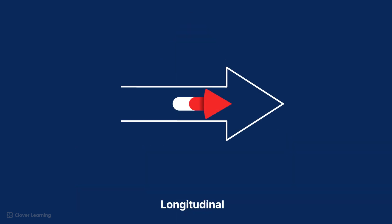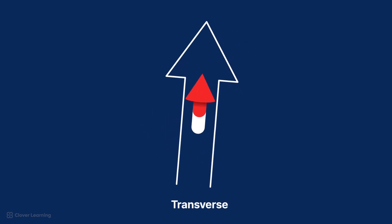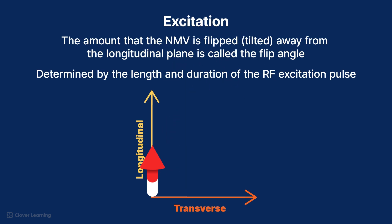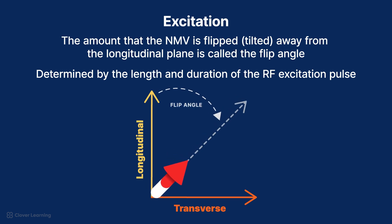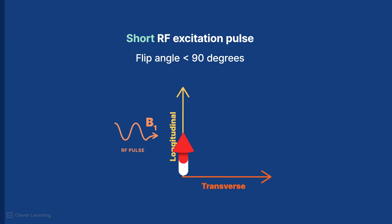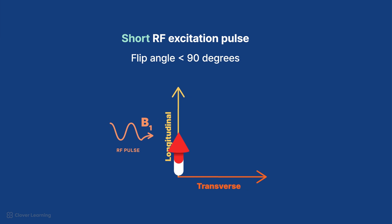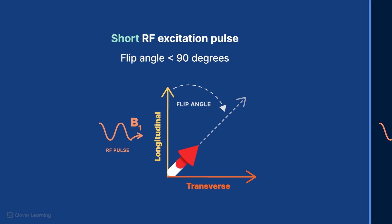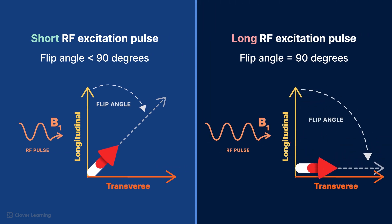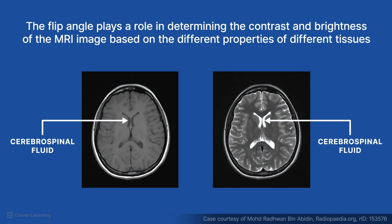This means that the NMV loses longitudinal magnetization and gains transverse magnetization, which is what we can measure in an MRI scanner. The amount that the NMV is tilted or flipped away from the longitudinal plane is called the tilt or flip angle. The flip angle is determined by the length and duration of the RF excitation pulse. If a short RF excitation pulse is used, the flip angle may be less than 90 degrees. If a longer RF excitation pulse is used, the flip angle might be exactly 90 degrees. The flip angle plays a role in determining the contrast and brightness of the MRI image based on the different properties of different tissues, which will be discussed in a different lesson.